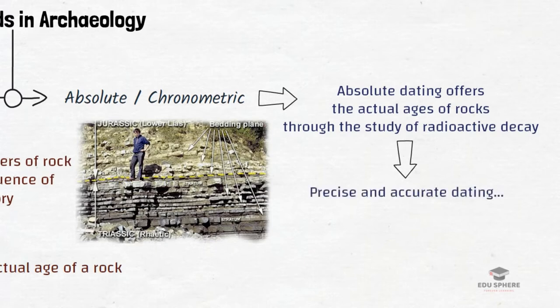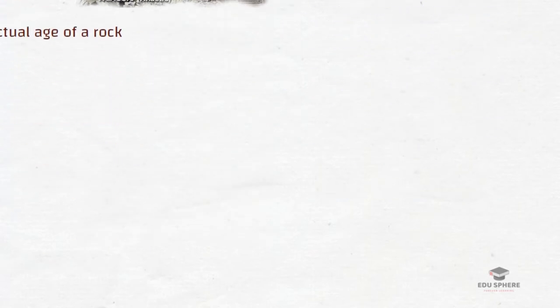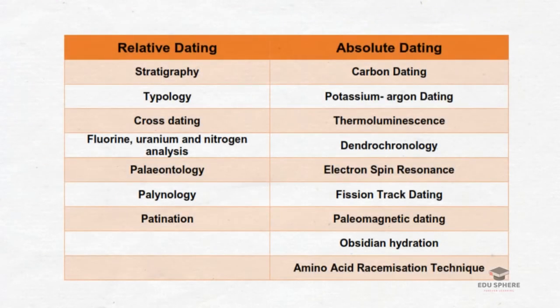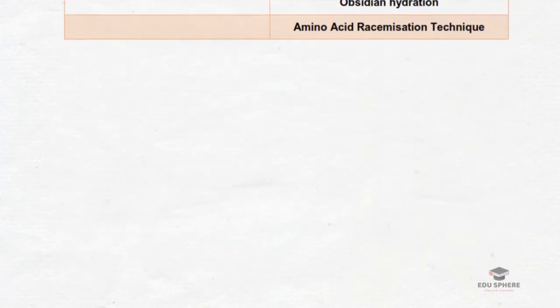In the early stage of prehistoric studies, only Relative dating chronology methods were commonly used. Later on, with the emergence of new methods, there has been a total change in the dating scenario. A list of some of the Absolute and Relative methods are shown here. We shall discuss each of these methods in detail as we move ahead. Now let us start with some of the commonly used Relative dating methods.